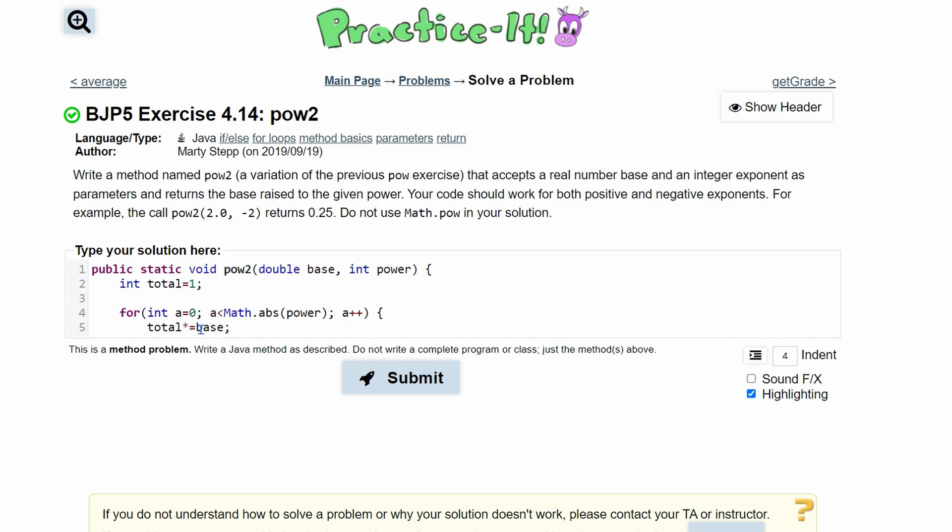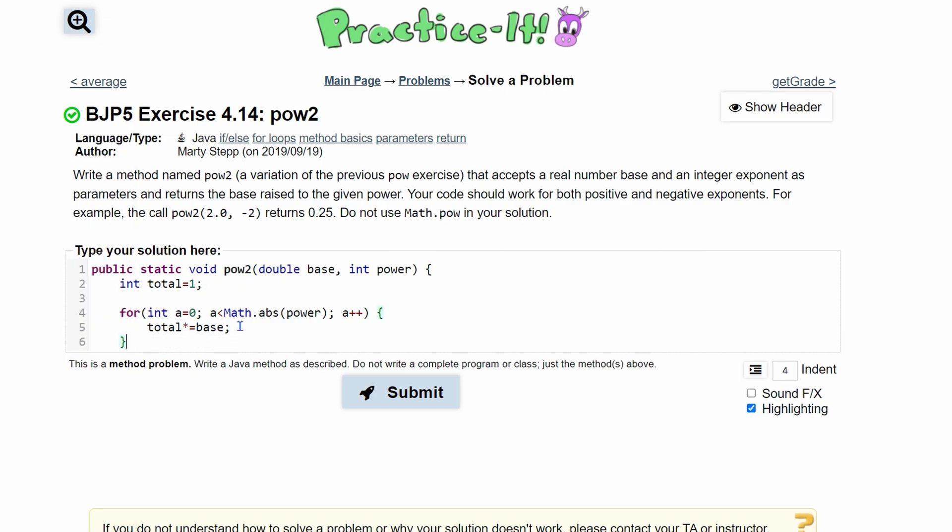So we have basically 1 times our base, and that's for the 0th time. And then we're going to do it for the first time, second time, third time, and then if we end up the fourth time like we did here, we get this value. So that's it for our math.pow. That's it for pow2 if we only had to deal with positives.